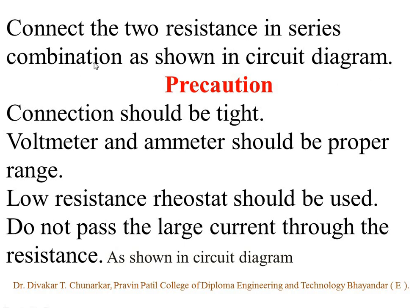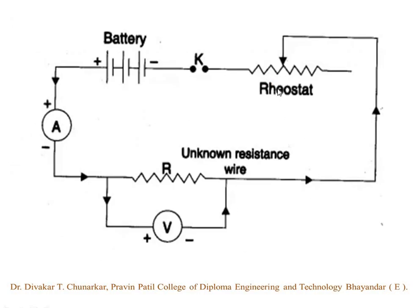Connect the two resistances in the series combination as shown in the circuit diagram. Precaution: the connection should be tight. Voltmeter and ammeter should be connected at the proper place. Low resistance rheostat should be used. Do not pass large current through the resistance. By the way, one ampere current applied — you have to stop at one ampere current and see the reading of the voltmeter.